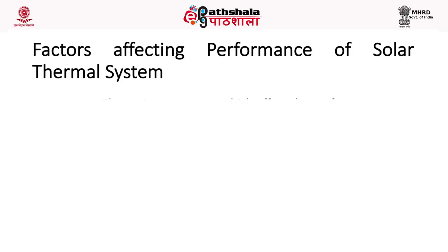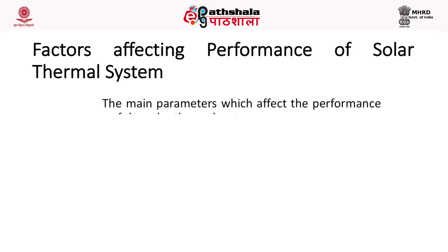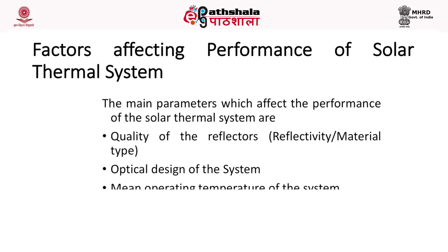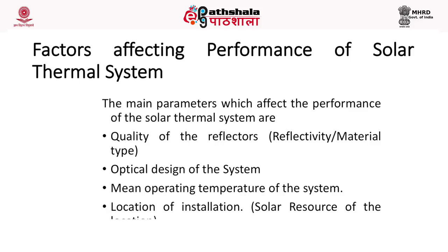The main parameters that affect the performance of a solar thermal system are: the quality of the reflectors — that is, reflectivity and material type; the optical design of the system; the mean operating temperature of the system; and the solar resource at the location of installation.